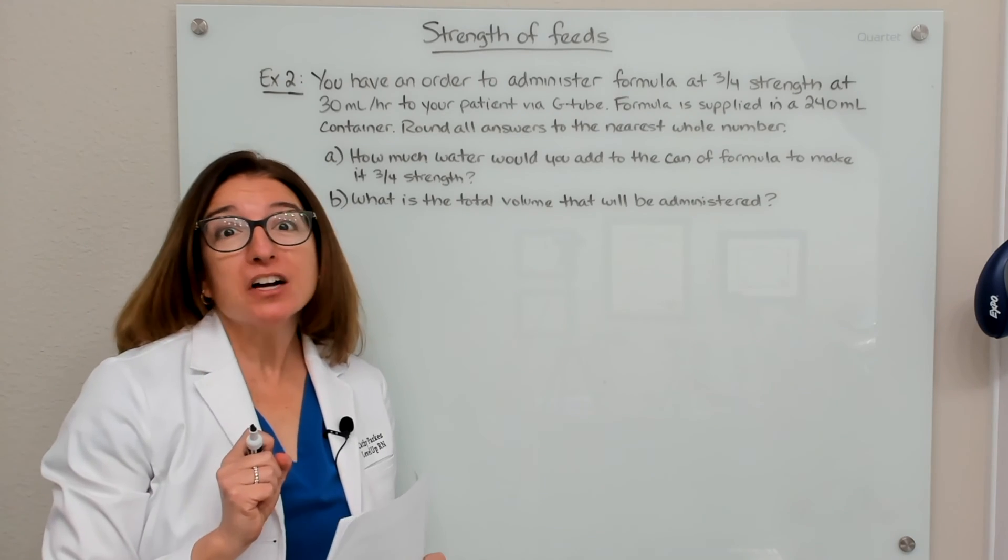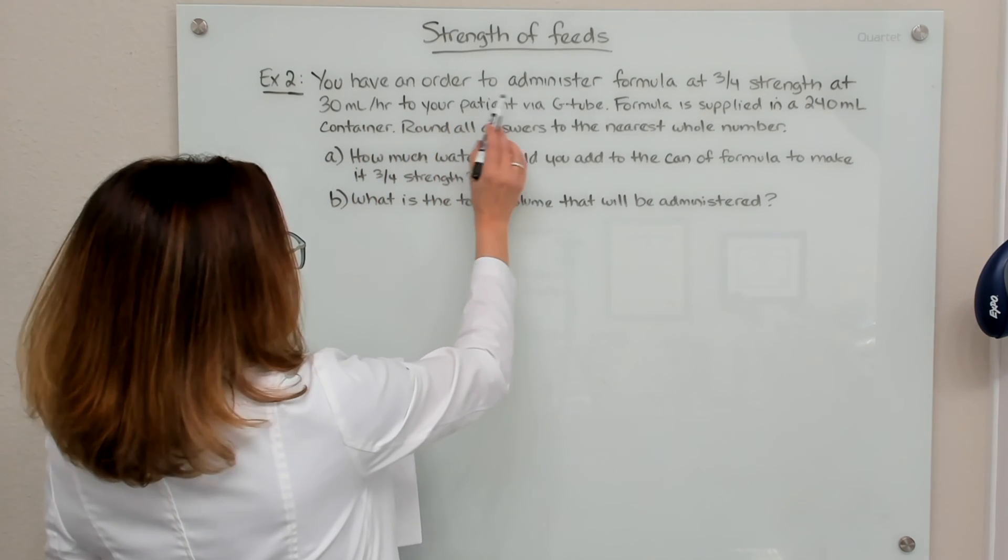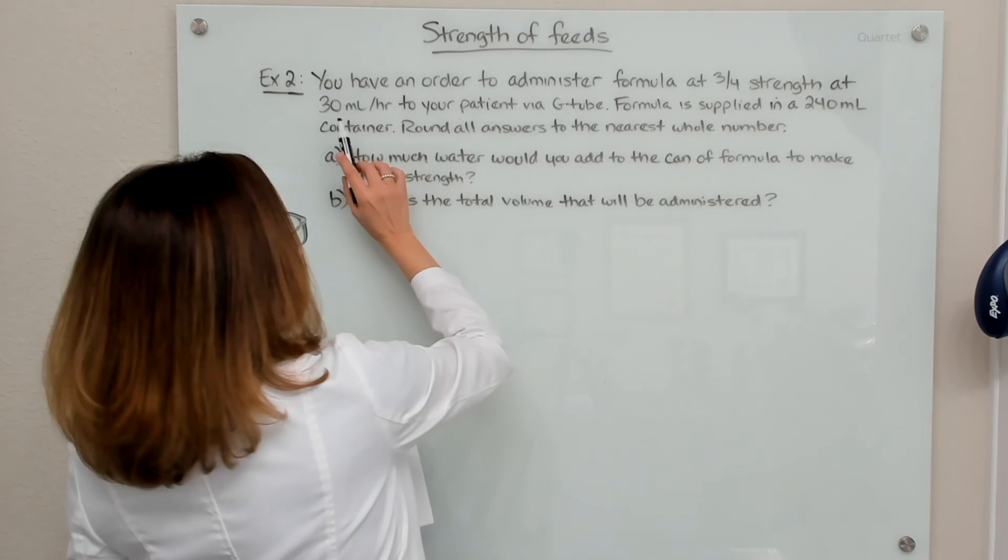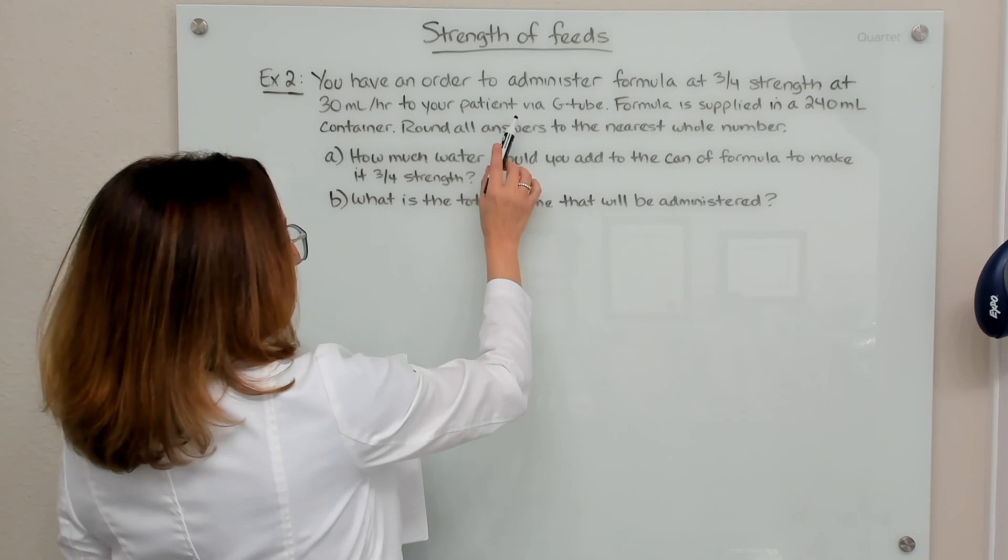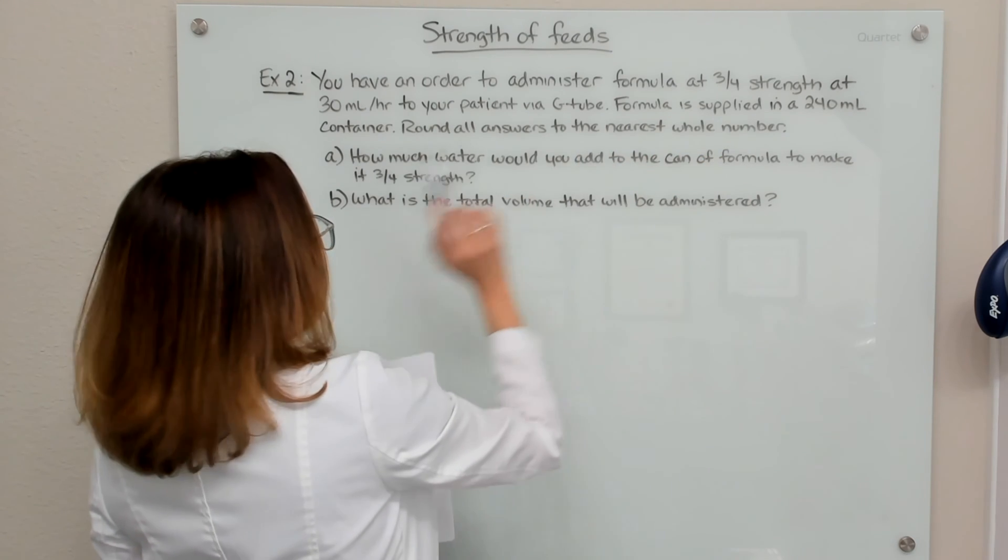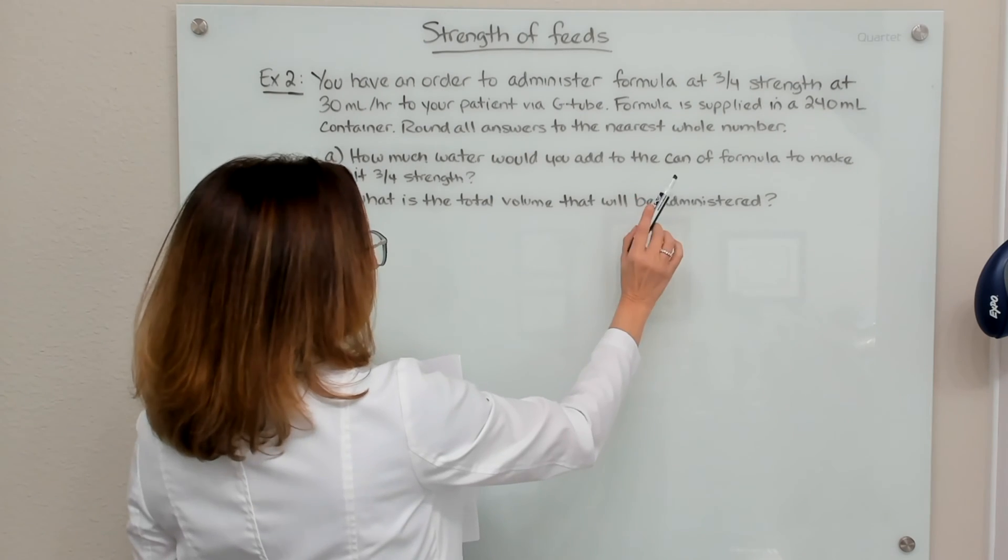Let's now work through our second example problem. In this problem, we have an order to administer formula at three quarters strength at 30 milliliters per hour to our patient with a G-tube. Formula is supplied in a 240 ml container. And we need to round all our answers to the nearest whole number.